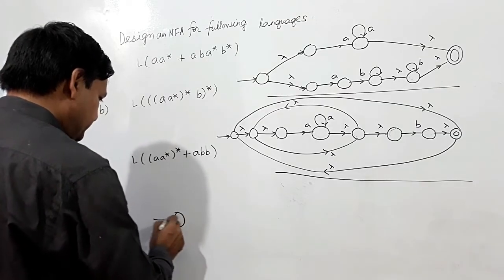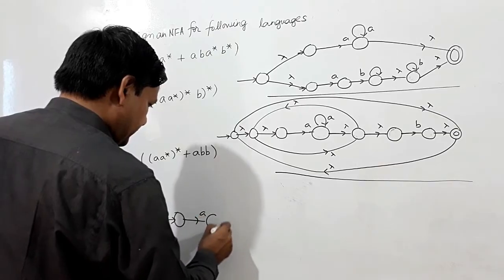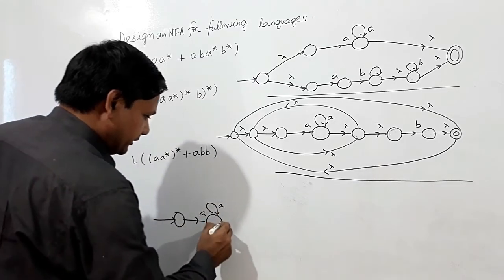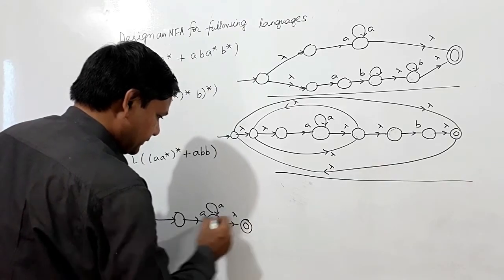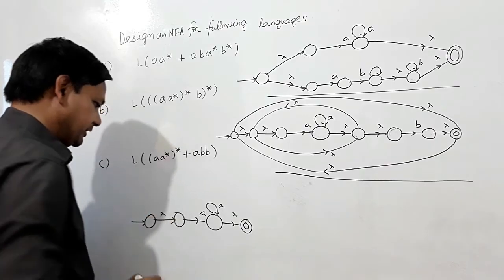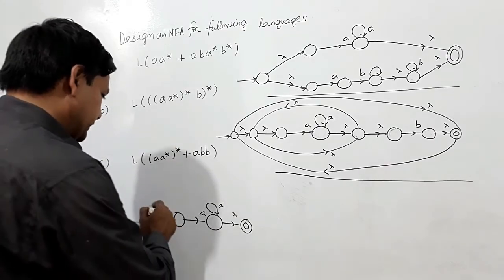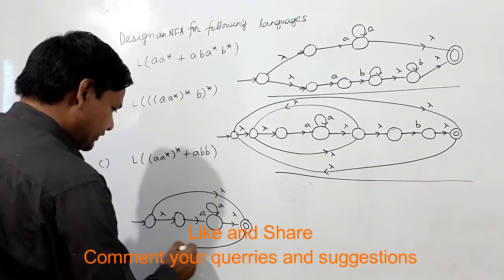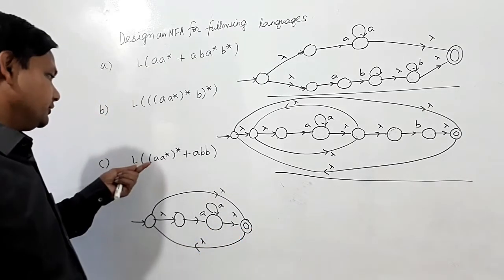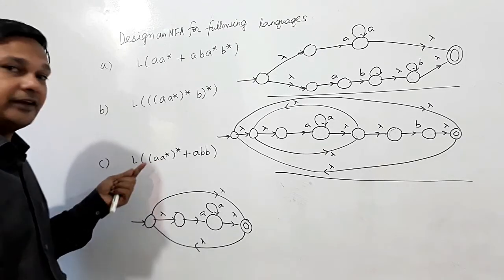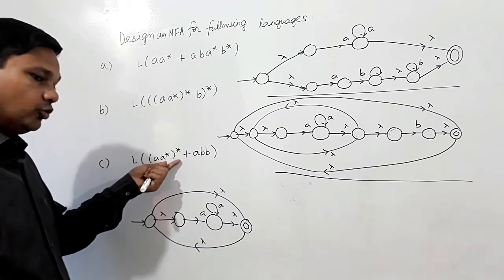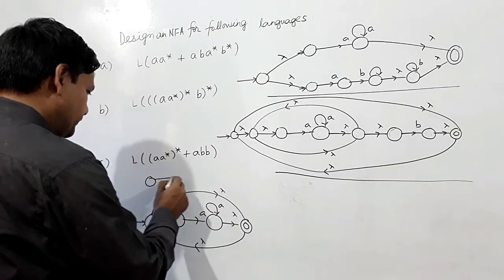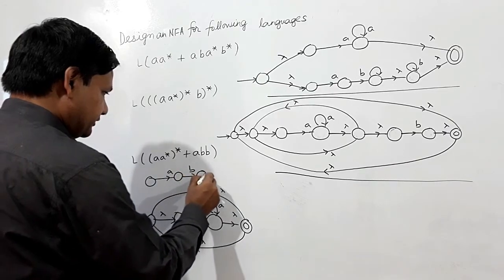For part C, A·A* whole star — it is a closure. For A* whole star, I will make a lambda transition from here; this will be the final state. I will make a new initial state taking a lambda transition. I can reach the initial state to the final state at lambda transition, and from the final state to the initial state at lambda. This is the NFA for A* whole star. Now I have to make a union with ABB, so ABB will be written as: this is A, this is B, and this is B.